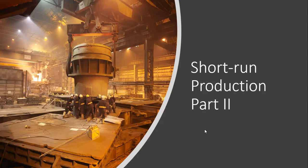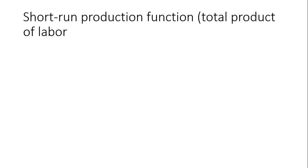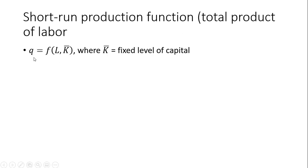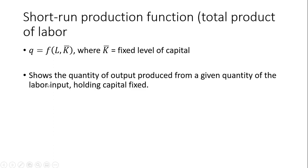This is part two in looking at short run production of the firm. The short run production function, sometimes called total product of labor or total physical product of labor, can be written as the following. The quantity of output is a function of units of labor and K-bar, where K-bar is a fixed level of capital. This shows the quantity of output produced from a given quantity of the labor input holding capital fixed.